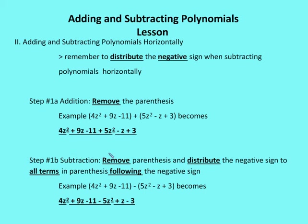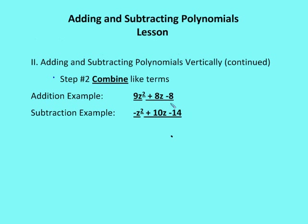When we're subtracting, we need to make sure we distribute the negative sign to all terms in the parentheses following the negative sign. So we have 4z squared plus 9z minus 11, and we're subtracting 5z squared minus z plus 3. We keep all values and signs the same for the first polynomial, but for the polynomial we're subtracting, we change the sign of each term — it becomes minus 5z squared plus z minus 3. Step two is to combine like terms. In the first example, we end up with 9z squared plus 8z minus 8; in the second, with minus z squared plus 10z minus 14.